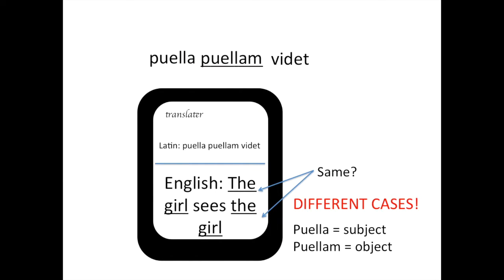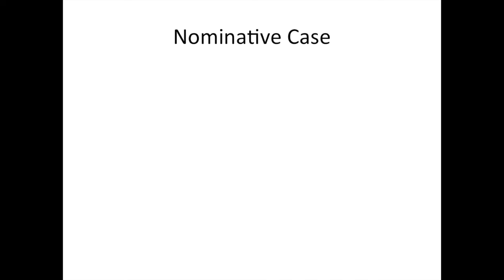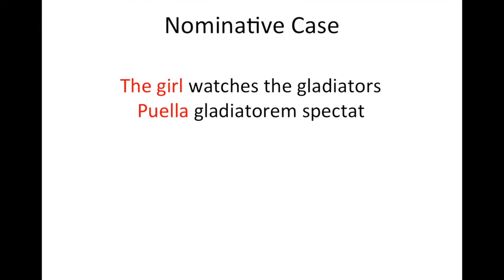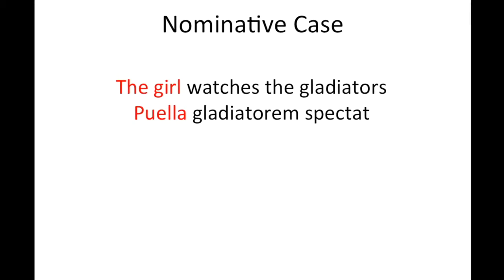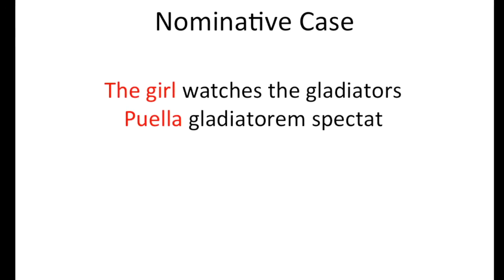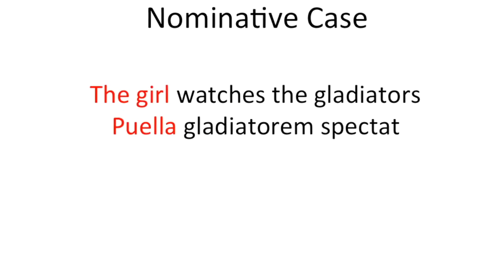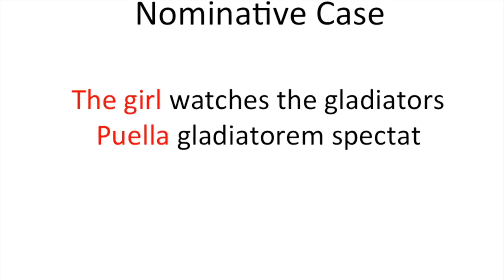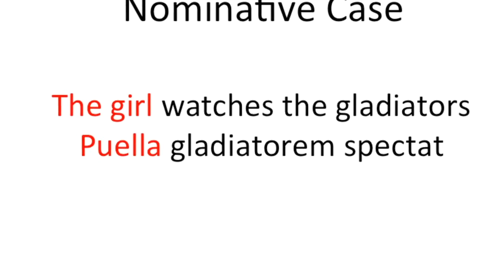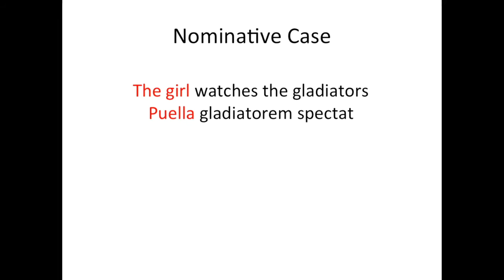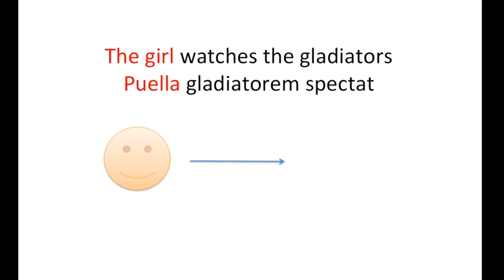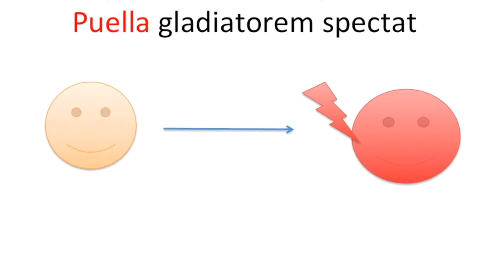In Latin there are six cases, and we're gonna look at each one of them using some examples. First, the nominative case — the nominative case is the subject. For example: 'The girl watches the gladiators,' or in Latin, 'puella gladiatorum spectat.' In this case, the girl, or 'puella,' is watching, so she is the subject and therefore it is in the nominative case.